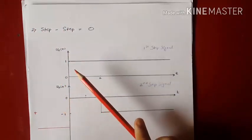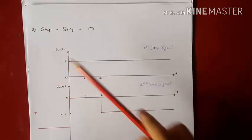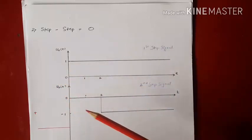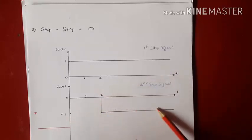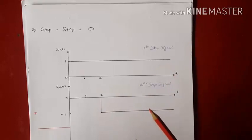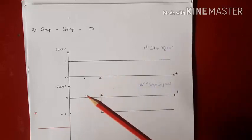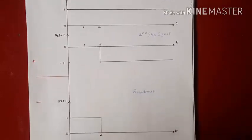Consider u1 of t, a step signal of infinite duration and amplitude 1. u2 of t is a similar step signal but with a reverse amplitude of minus 1, starting at t equals 2, and infinite in nature same as u1 of t. Since u2 already has a negative amplitude, I need not subtract it — I will simply add u1 of t and u2 of t. The resultant x of t signal will be as shown here.